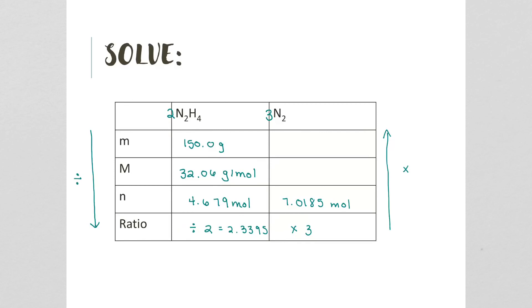The molar mass of nitrogen is 2 times 14.01, so 28.02 grams per mole. Then we times that by the 7.0185, so you get 196.7 grams.